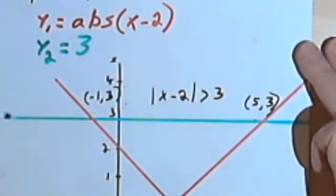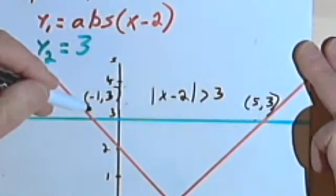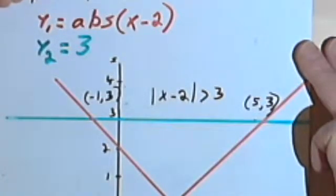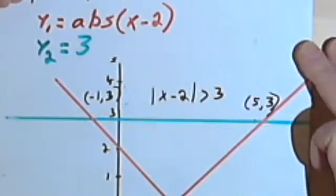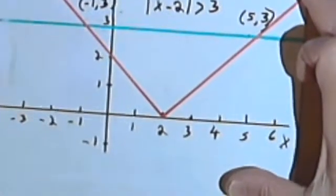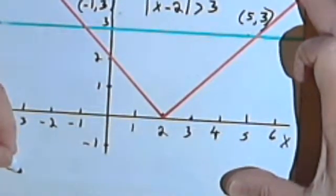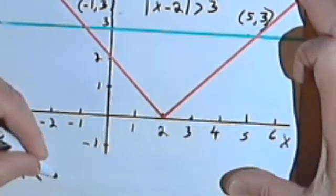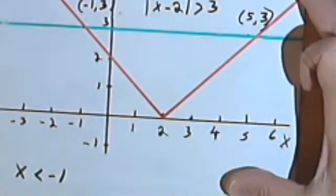So everywhere from negative infinity all the way up to negative 1 will mean that x is a valid answer. Let's write that in and make sure this makes sense. What I know is that x has to be less than negative 1.